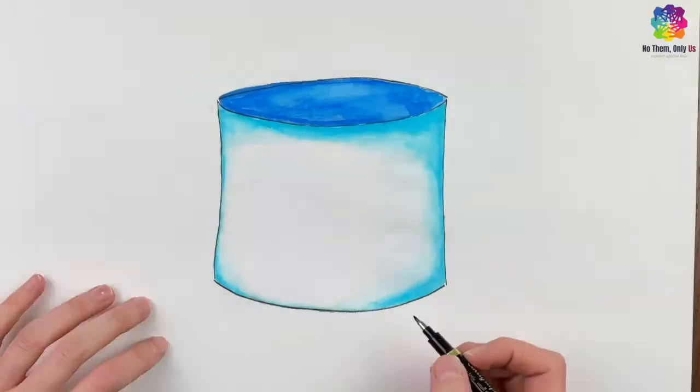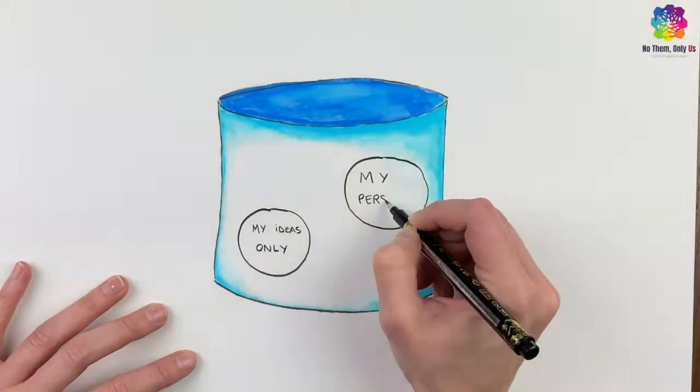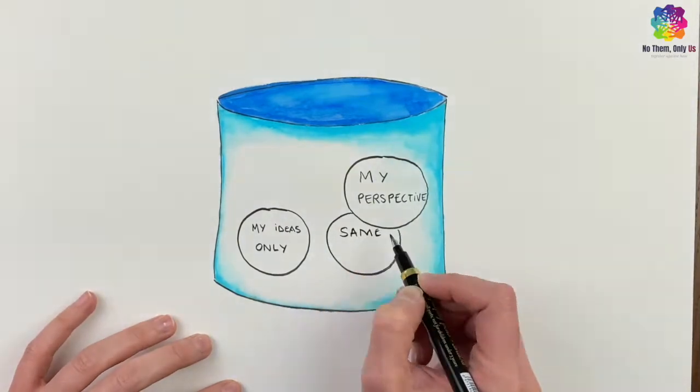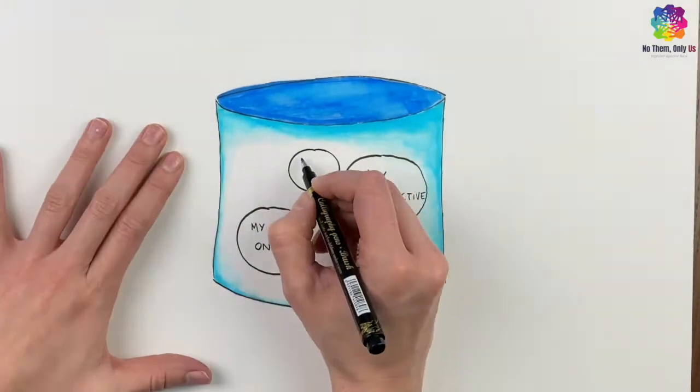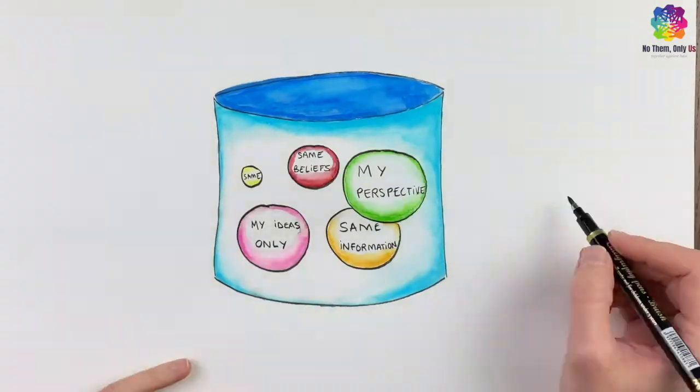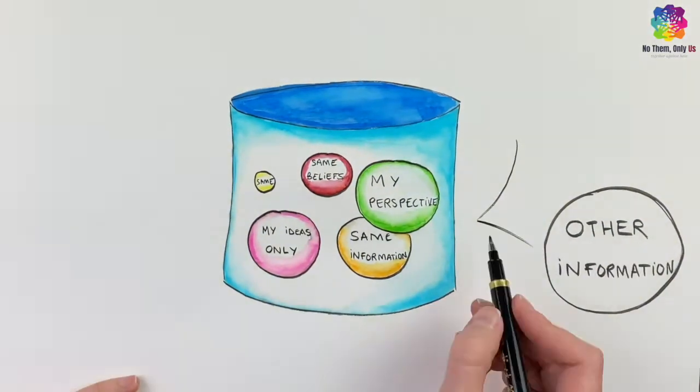When we exclude people from our feeds we don't agree with, we surround ourselves by an echo chamber. Now we only see like-minded friends who think exactly like us and will echo what we think.